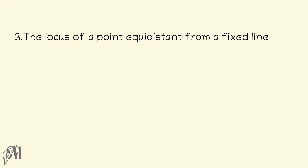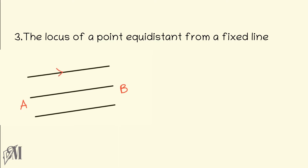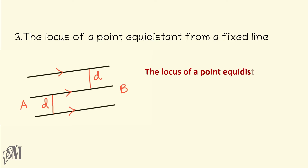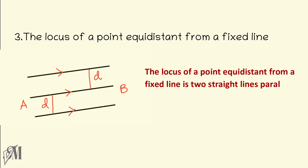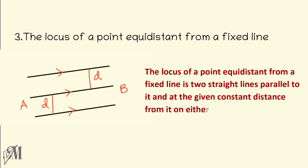Now let us see the locus of a point which is equidistant from a fixed line. I draw a line and name it AB — this is a fixed line. The path of a point at equal distance from the whole line AB will be a parallel line to AB at a given distance. We can draw two parallel lines to AB on either sides maintaining the same distance. The locus of a point equidistant from a fixed straight line is two straight lines parallel to it at the given constant distance on either side.